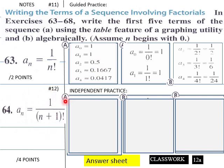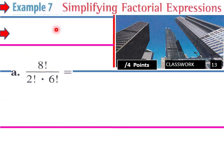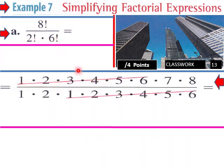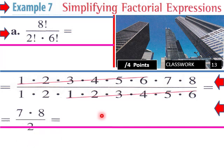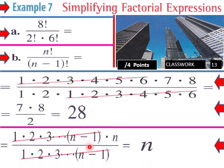Students, that one is yours. Now let's move to example seven: simplifying factorial expressions. Simplify 8! / (2! × 6!). Expanding 8! and canceling: the 6! in the numerator cancels with the 6! denominator, leaving (7 × 8) / (1 × 2) = 56/2 = 28.